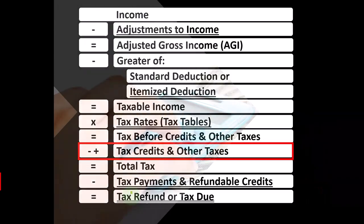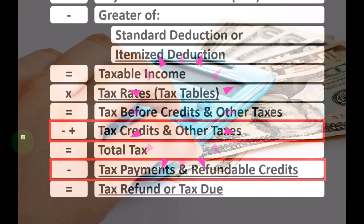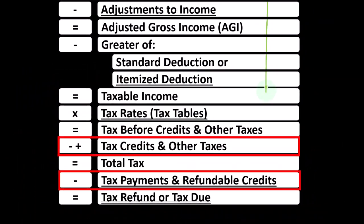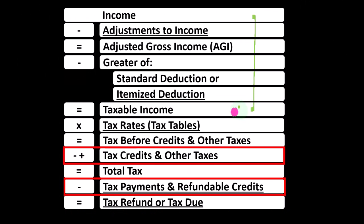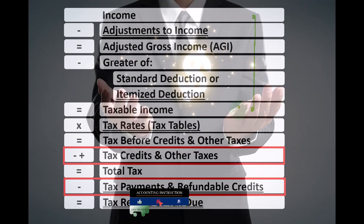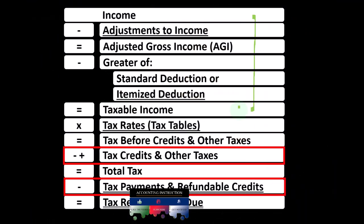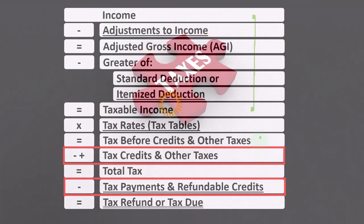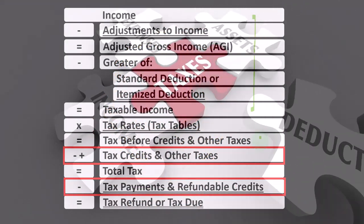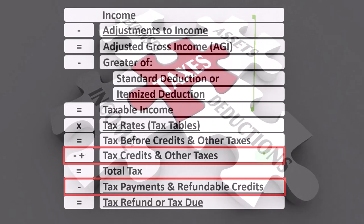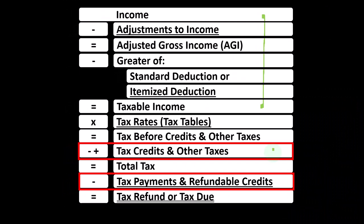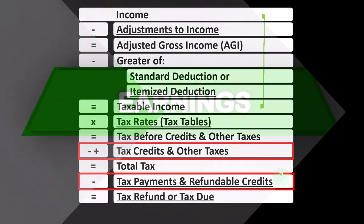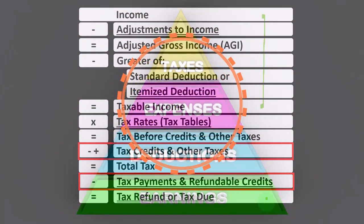Looking at the income tax formula, we're down at the bottom in the credit area. The first half of the income tax formula is in essence an income statement, with taxable income being similar to net income. We then take that taxable income, calculate the tax using a progressive tax system to get to the tax before credits and other taxes — such as self-employment tax — and then subtract payments made through withholdings or estimated tax payments to get to the tax refund or tax due.